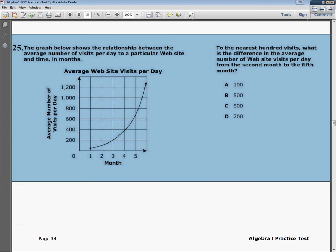The question says: the graph below shows the relationship between the average number of visits per day to a particular website and time in months. To the nearest hundred visits, what is the difference in the average number of website visits per day from the second month to the fifth month?